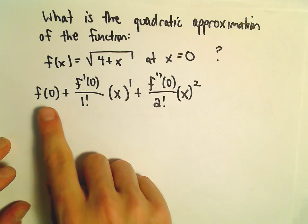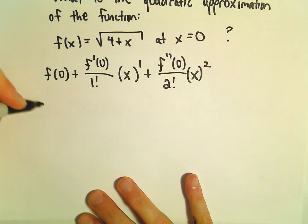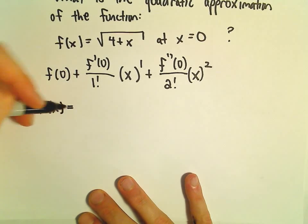So again, all we have to do is find the values for f of 0, f prime of 0, and f double prime of 0. So hopefully that won't be too bad here.